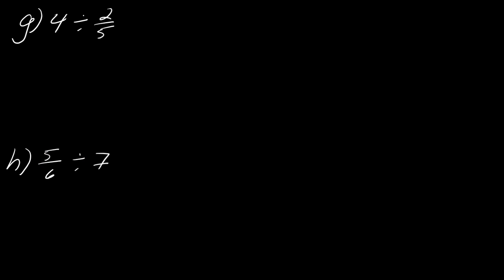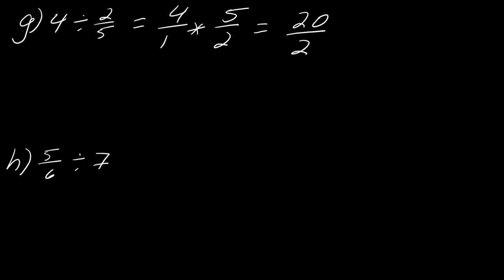For the next one, remember you have to flip the second fraction. I'll treat this four as four over one. Instead of dividing by two fifths, I multiply by five halves, so this becomes 20 over two. And 20 over two simplifies to 10 — so the answer is just 10.